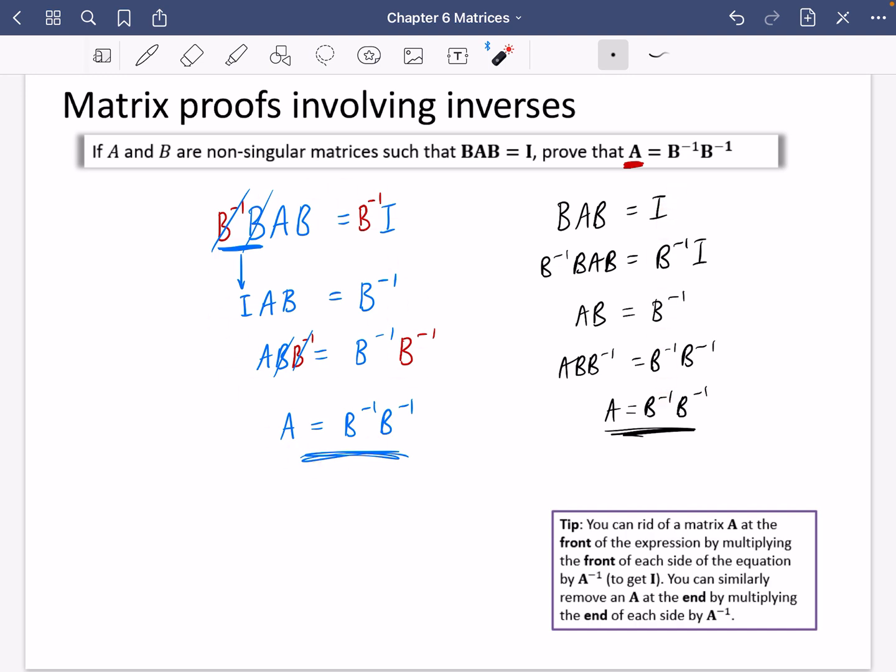This was me explaining about how things work. And all I've written in this tip here is that you can get rid of a matrix A at the front of expression by multiplying the front of each side of the equation by A inverse, which gives you I. You can similarly remove an A at the end by multiplying the end of each side by A inverse. So we did the same thing here, but it wasn't with A inverse. It was B inverse. To get rid of this B, I multiplied by B inverse at the front. And to get rid of this B, I multiplied by B inverse at the end of the expression.